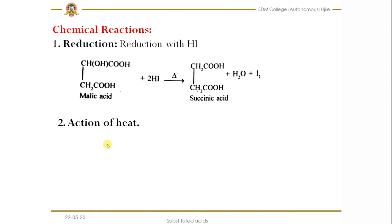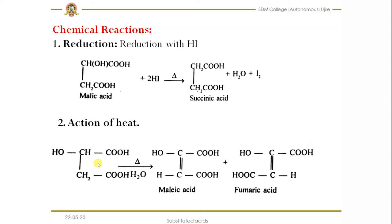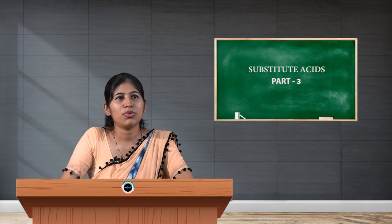The second reaction is the action of heat. When you heat malic acid at a higher temperature, we get a mixture of two products: maleic acid and fumaric acid. The difference between maleic and fumaric acid is that the COOH groups are present on the same side in maleic acid, while in fumaric acid they are on the opposite side. The carbon, hydroxy, and oxygen groups are the same — only the carboxylic group positions differ; we can say it is cis-trans isomerism.